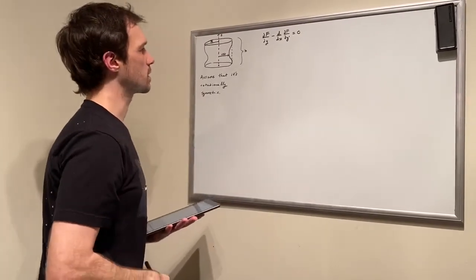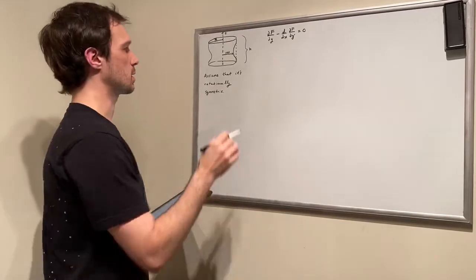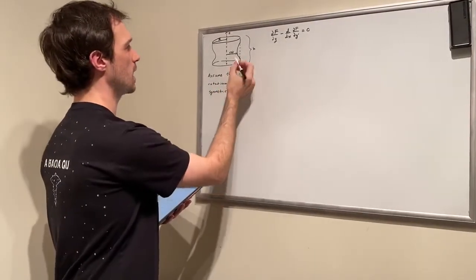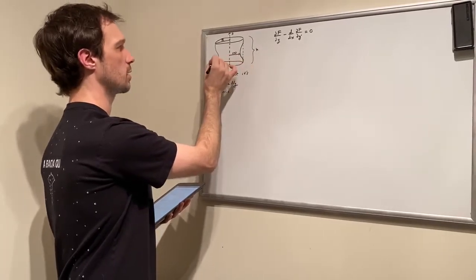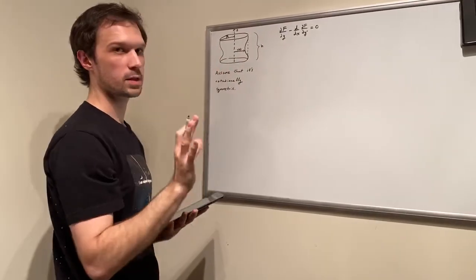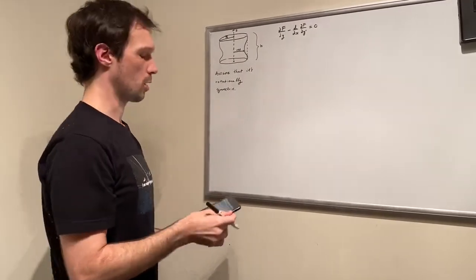Okay, so first let's assume that this shape is rotationally symmetric. So that means that it's not going to be some distance right here at height z but on the other side of the cylinder it'll be a different distance. Let's say they're the same distance. That seems like a reasonable assumption.